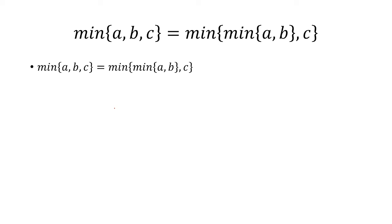Finally, let's assume that the minimum of a, b, and c is c. So now when we look at the minimum of a and b, it doesn't really matter what the minimum is.